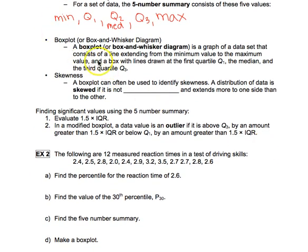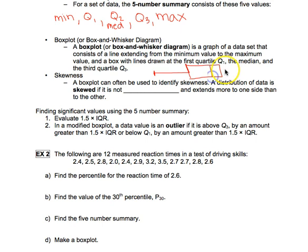A box plot, or box and whisker diagram, is a graph of a data set that has a line extending from the minimum to the maximum. On that line you draw a box from the first quartile to the third quartile, with a dividing line at the median. The minimum is at the far left, then the first quartile starts the box, the median is the middle line in the box, the third quartile ends the box, and the maximum is at the far right. We call it a box and whisker because the lines extending from the box are the whiskers.